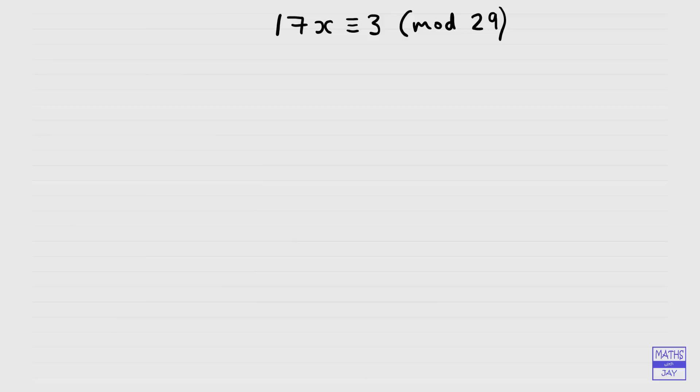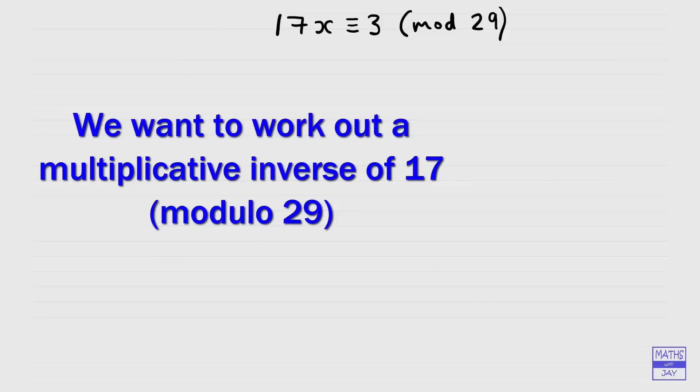So what we're doing here is we're looking for a multiplicative inverse of 17 in modulo 29. So that means what we're looking for is a number, an integer, so that when we multiply by 17 we end up with 1. So let's just write that down, let's call our integer v, so we're looking for an integer v such that 17v is congruent to 1. And of course that's in mod 29.